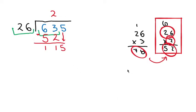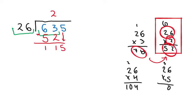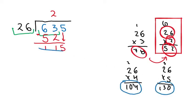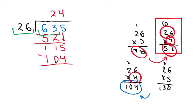Now we ask ourselves the same question: how many times does 26 fit into 115? Let's try 26 times 4: 4 times 6 is 24, carry 2; 4 times 2 is 8 plus 2 is 10 — so 104. And 26 times 5: 5 times 6 is 30, carry 3; 5 times 2 is 10 plus 3 is 13 — so 130. Between 104 and 130, which is closest to 115? It's 104, because 130 already exceeds 115. So 26 times 4 equals 104, and 4 goes up in the quotient.